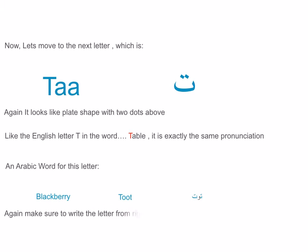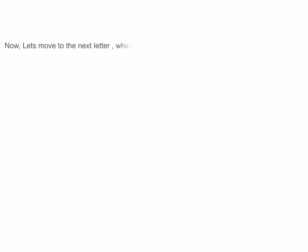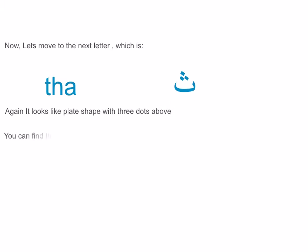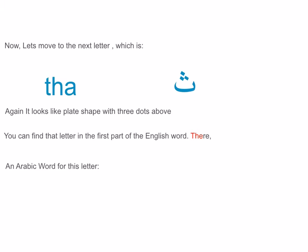Now let's move to the next letter, which is Tha. It looks like a plate shape with three dots above. You can find this sound in the first part of the English word 'there.' An Arabic word for this letter would be 'thaqafah,' which means 'culture.' Make sure to write the letter from right to left.